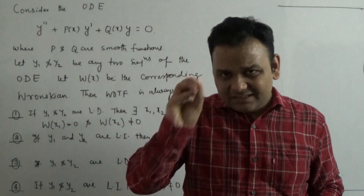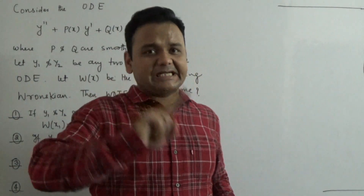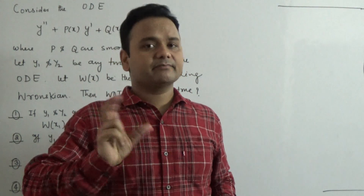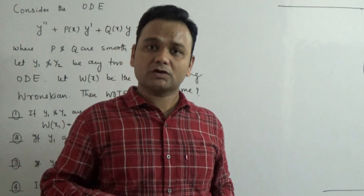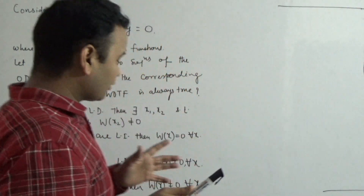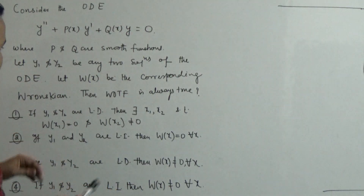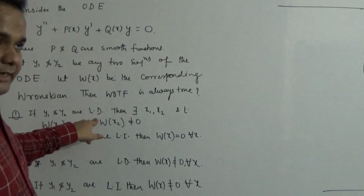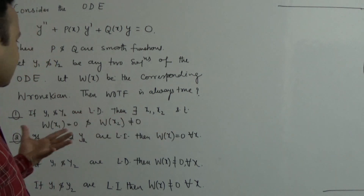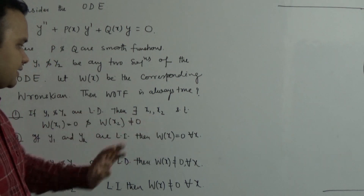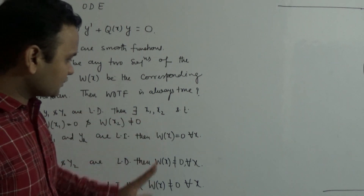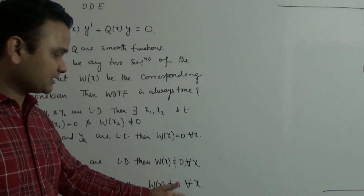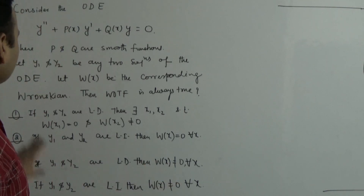The question is asking about the linear independence and dependence of solutions in terms of the Wronskian. The options ask: if y1 and y2 are linearly independent, what can you say about the Wronskian? Is it zero, non-zero, always non-zero, and so on?